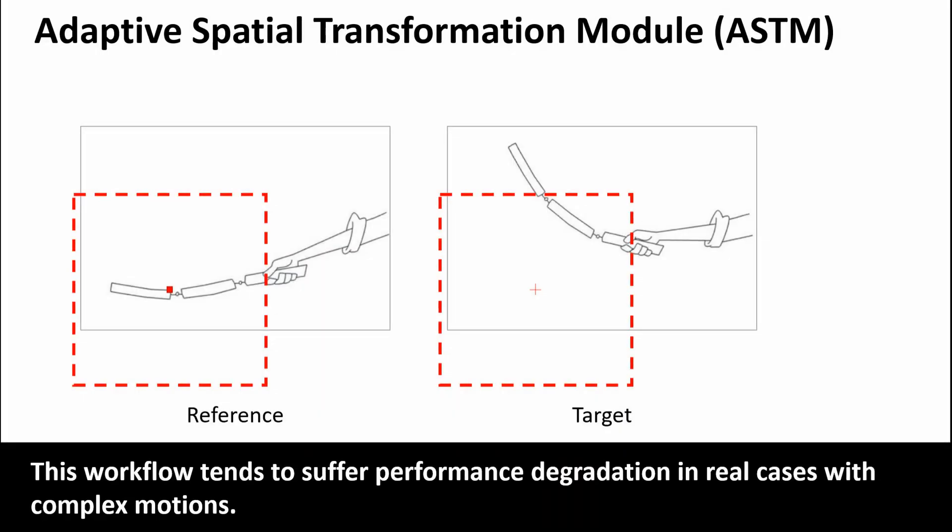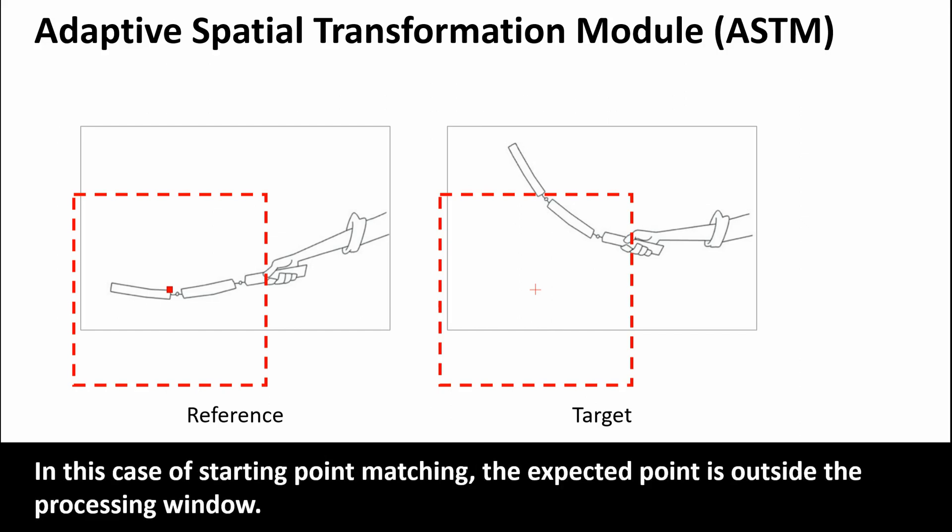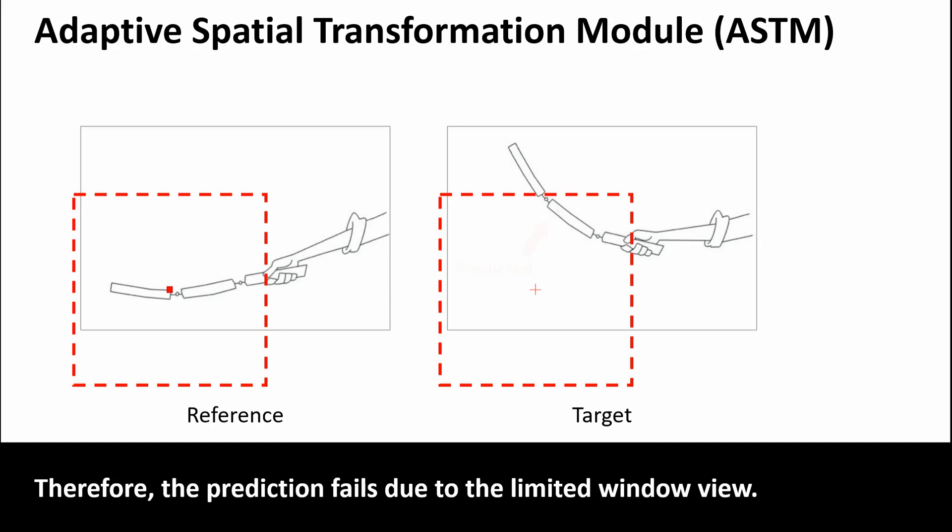This workflow tends to suffer performance degradation in real cases with complex motions. In this case of starting point matching, the expected point is outside the processing window. Therefore, the prediction fails due to the limited window view.